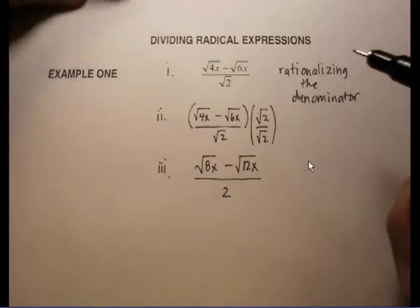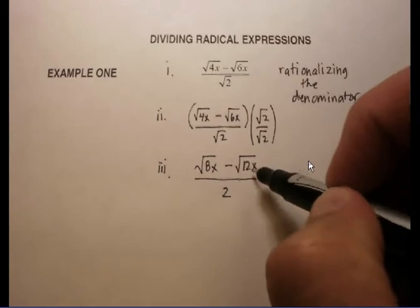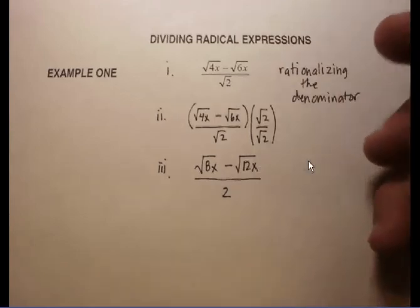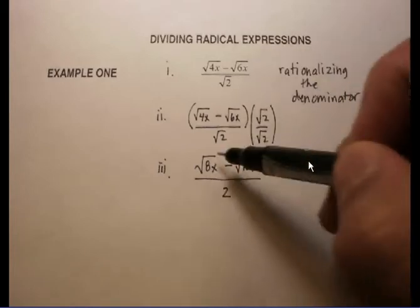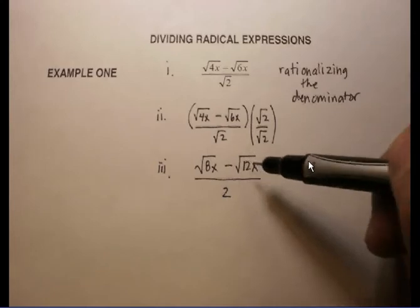Now some of you might be tempted to say if I've got the square root of 8x minus the square root of 12x, I've got the square root of negative 4x. And that's not correct. You can only subtract radicals when what you've got is exactly the same underneath.